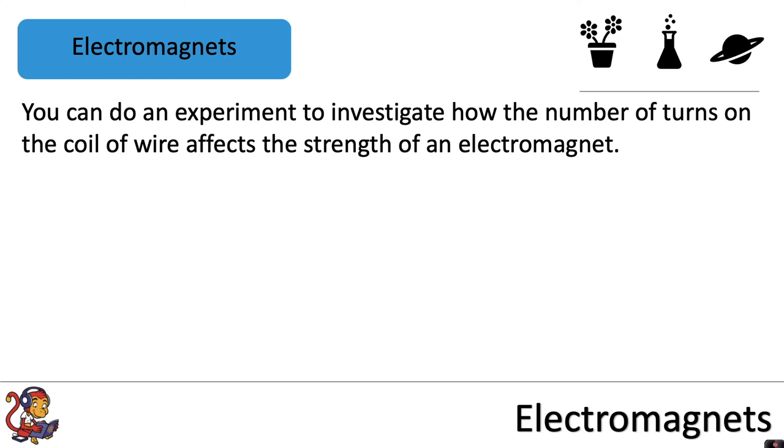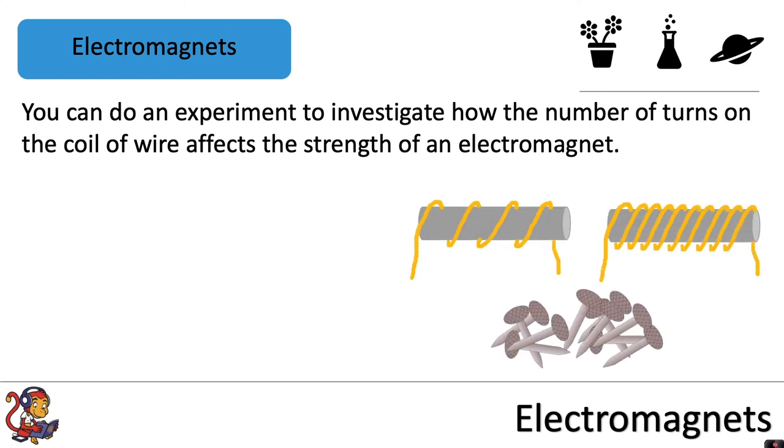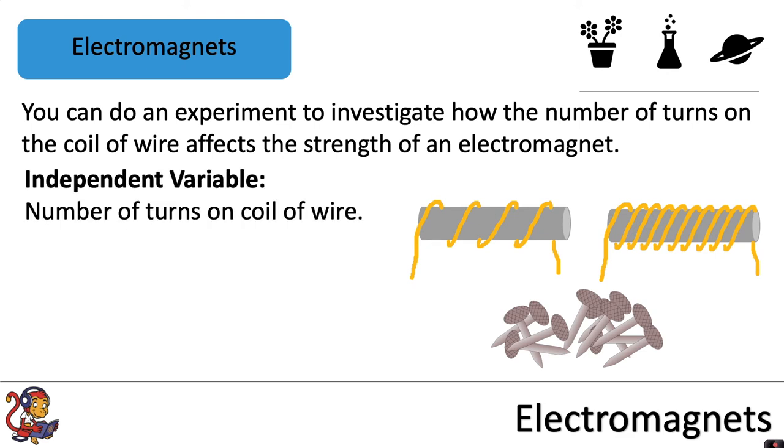You can do an experiment to investigate how the number of turns on the coil of wire affects the strength of an electromagnet. In the images we have one electromagnet with four turns and one with ten turns. In your investigation you'd probably want to use around five different electromagnets with different numbers of turns. Our independent variable would be the number of turns on the coil of wire.